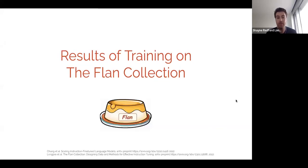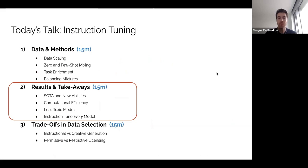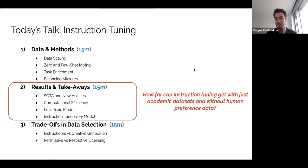This part of the talk covers the results of training on the Flan collection, both for Flan-T5 and Flan-PaLM, which are models discussed in depth in these two papers linked at the bottom. The results and takeaways ask how far can instruction tuning get with just academic datasets and without human preference data.